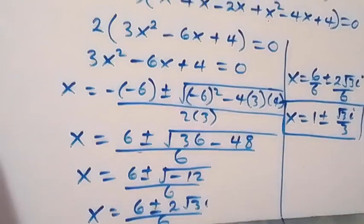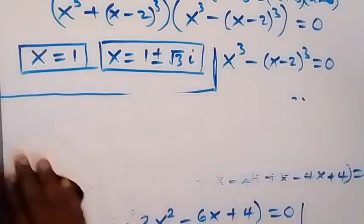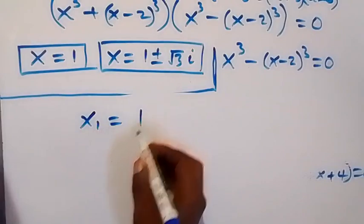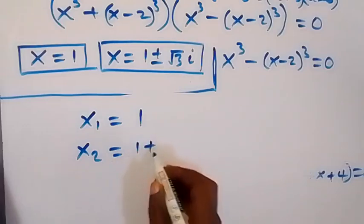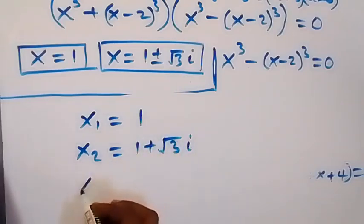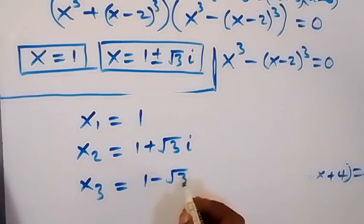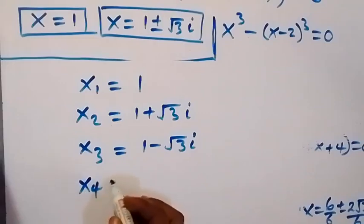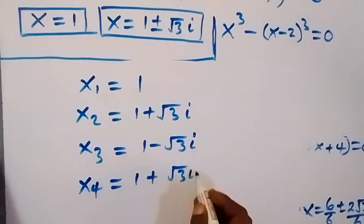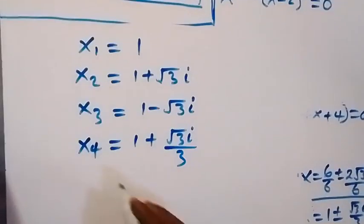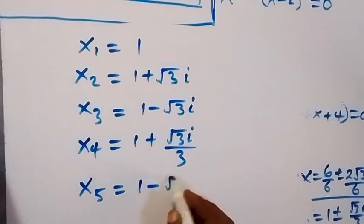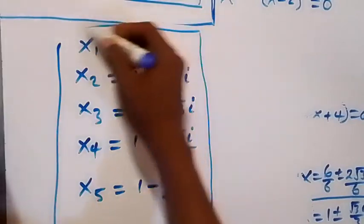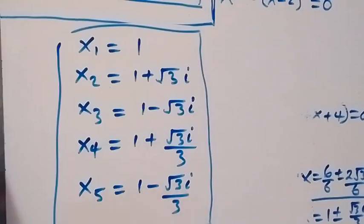Altogether we have five solutions to this problem. The solutions are: x₁ equals 1, x₂ equals 1 plus √3·i, x₃ equals 1 minus √3·i, x₄ equals 1 plus √3·i/3, and x₅ equals 1 minus √3·i/3.